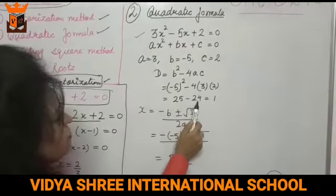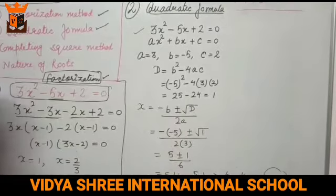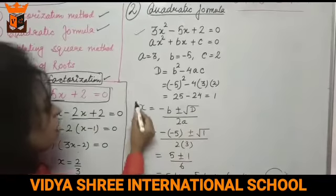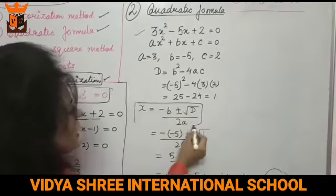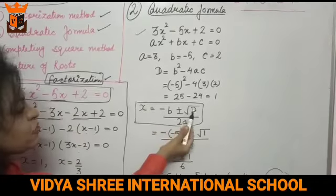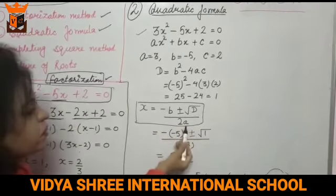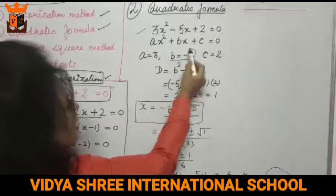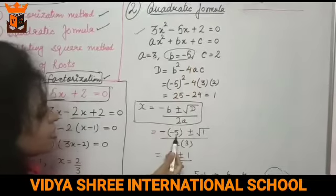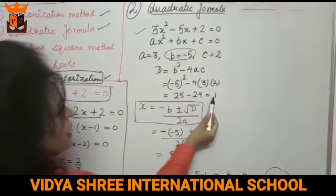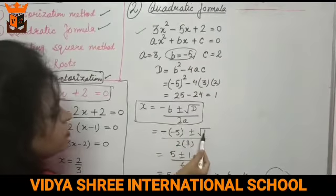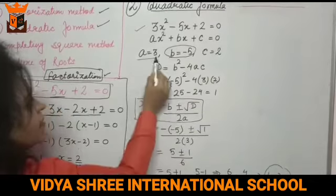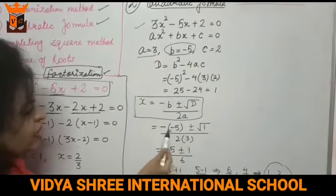So 25 minus 24 gives D equals 1. The quadratic formula is x equals minus B plus or minus root D upon 2A. Substituting: minus of minus 5, plus or minus root 1, upon 2 times 3, which gives 5 plus or minus 1 upon 6.